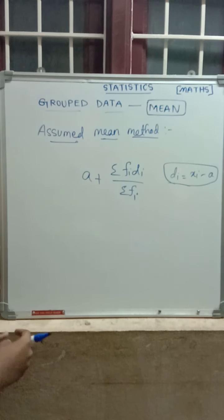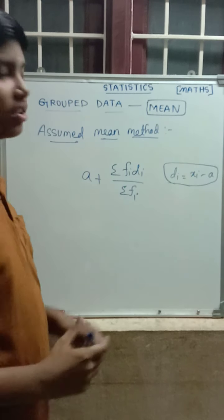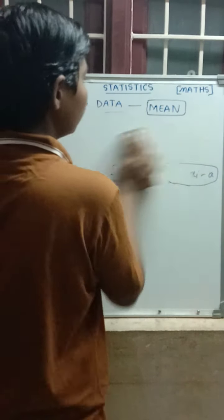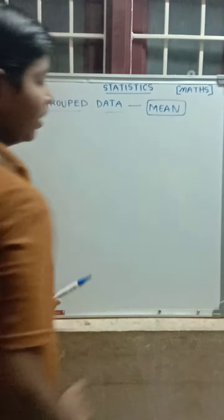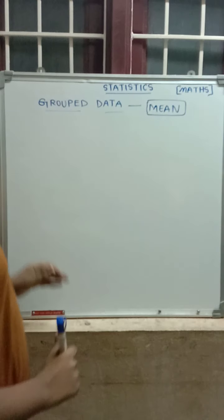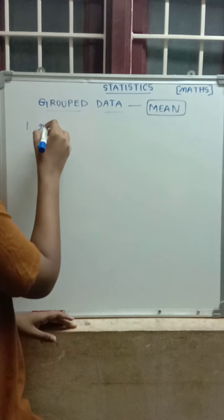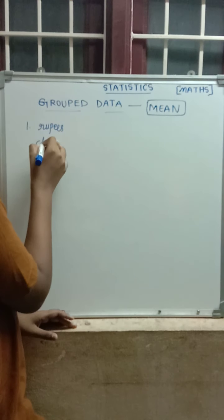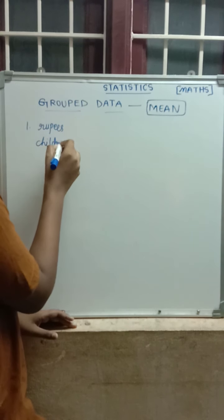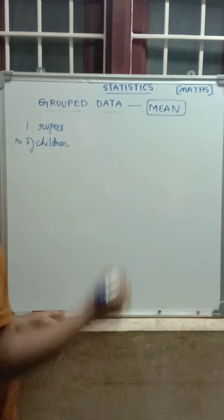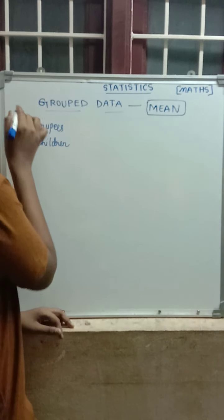Now let us discuss examples of how to find the mean. In grouped data, the examples will be in tabular form only — this is the main note here. The sums will always be in grouped data tabular form. So the first example involves rupees and number of children. We draw the table.